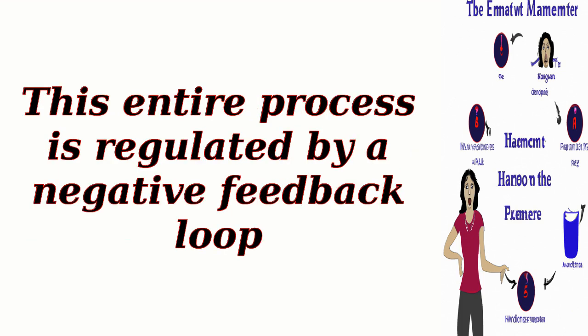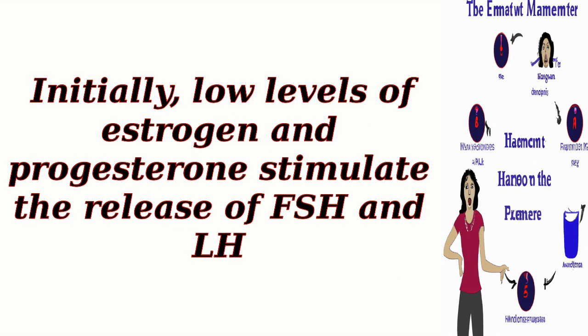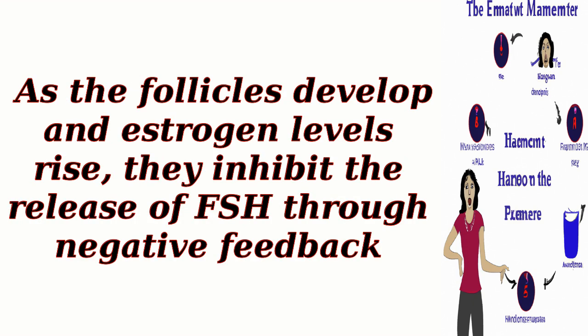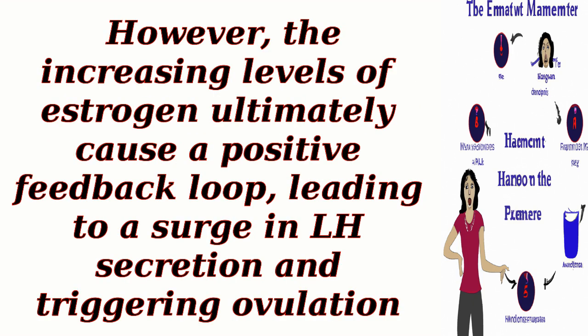This entire process is regulated by a negative feedback loop. Initially, low levels of estrogen and progesterone stimulate the release of FSH and LH. As the follicles develop and estrogen levels rise, they inhibit the release of FSH through negative feedback. However, the increasing levels of estrogen ultimately cause a positive feedback loop, leading to a surge in LH secretion and triggering ovulation.